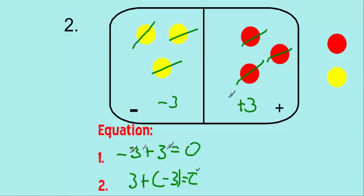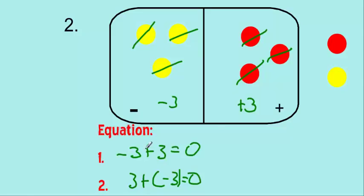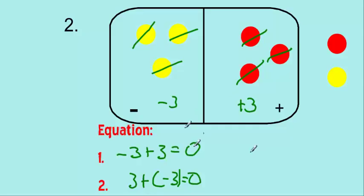These are additive inverses — the third term on our list. Remember, additive inverses always sum to zero. So negative three is the additive inverse of positive three.